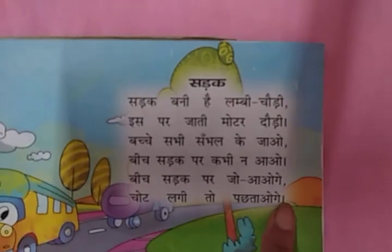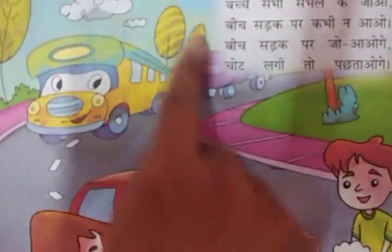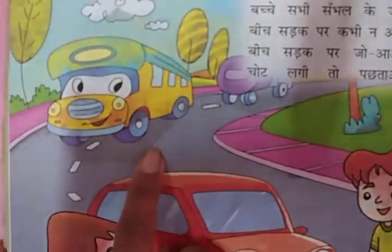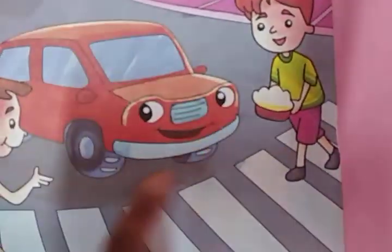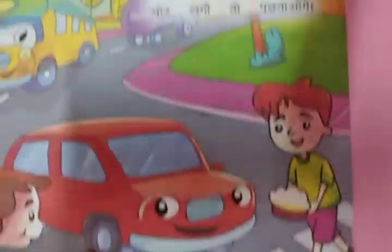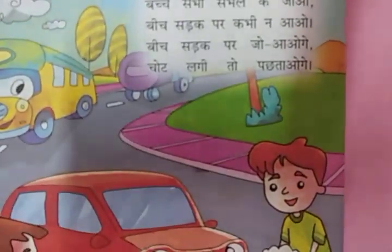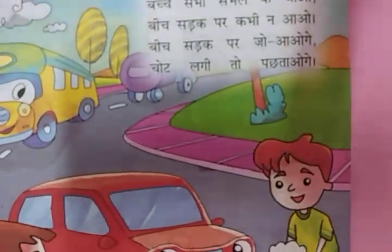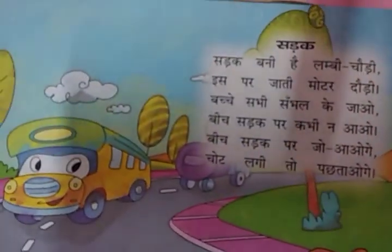Again we will read. But before reading, see the image first. So what is there in the image? A bus is there. A car is there. That means this is a road — the rhyme is of a road.